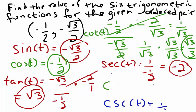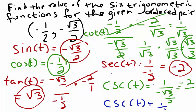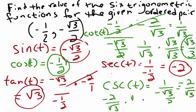Finally, we'll find cosecant of t, which is equivalent to 1 over y. So that gives us 1 divided by negative square root of 3 over 2. Multiplying by the reciprocal gives us negative 2 over square root of 3. Next we'll rationalize the denominator by multiplying numerator and denominator by square root of 3, which gives us negative 2 square root of 3 over 3.